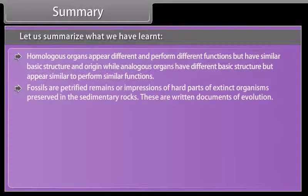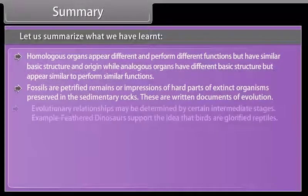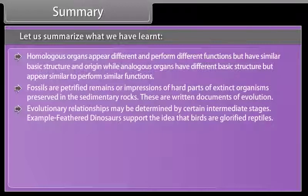Fossils are petrified remains or impressions of hard parts of extinct organisms preserved in the sedimentary rocks. These are written documents of evolution. Evolutionary relationships may be determined by certain intermediate stages. Example: Feathered dinosaurs support the idea that birds are glorified reptiles.